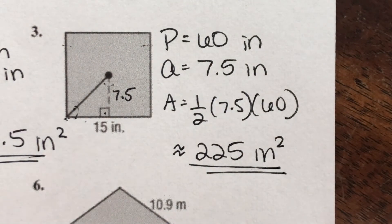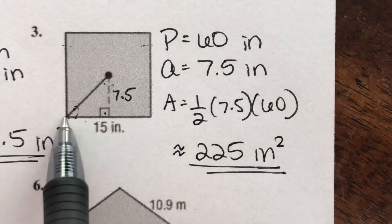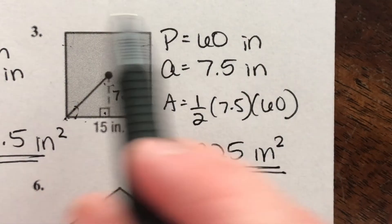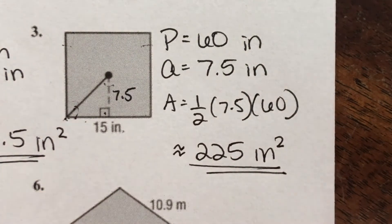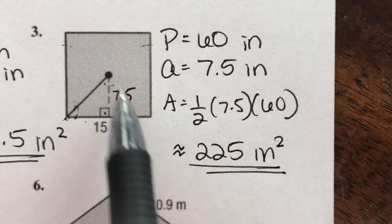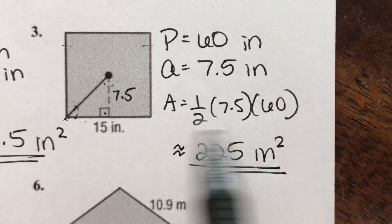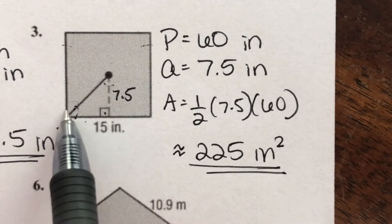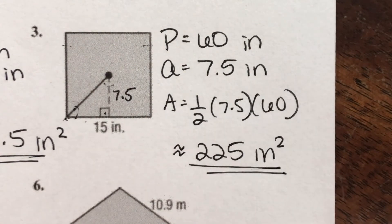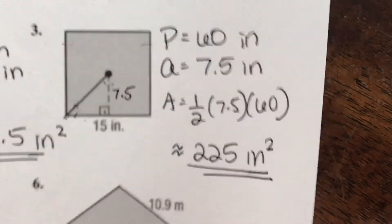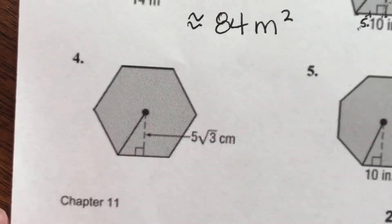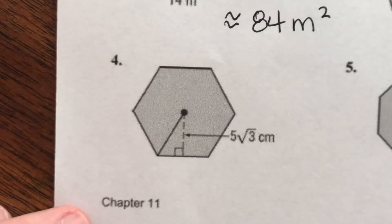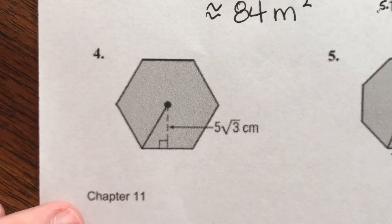Another easy way to figure it out is just 15 times 15 for the area of a square. But if we're using the apothem method, it's a good way to check ourselves — we know a square is easy. Now we have a hexagon.